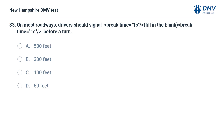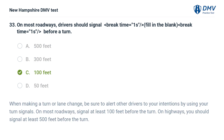On most roadways, drivers should signal how far in advance before a turn? A) 500 feet, B) 300 feet, C) 100 feet, D) 50 feet. The answer is C, 100 feet. When making a turn or lane change, alert other drivers using your turn signals. On most roadways, signal at least 100 feet before the turn. On highways, you should signal at least 500 feet before the turn.